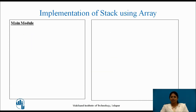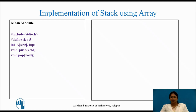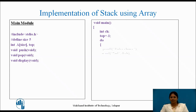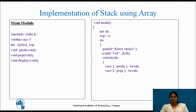Let us implement the stack using array in C programming. First, declare all header files and define the size as 5. We have an integer array of size 5 and an integer variable top as global variables. Push, pop, and display are functions whose prototypes are declared. In main, integer variable ch is declared to take the user's choice, and top is initialized to minus 1. Using a do-while loop, choices are continuously taken from the user. Using a switch: choice 1 executes the push function, choice 2 executes pop, choice 3 executes display, and choice 4 exits the program.